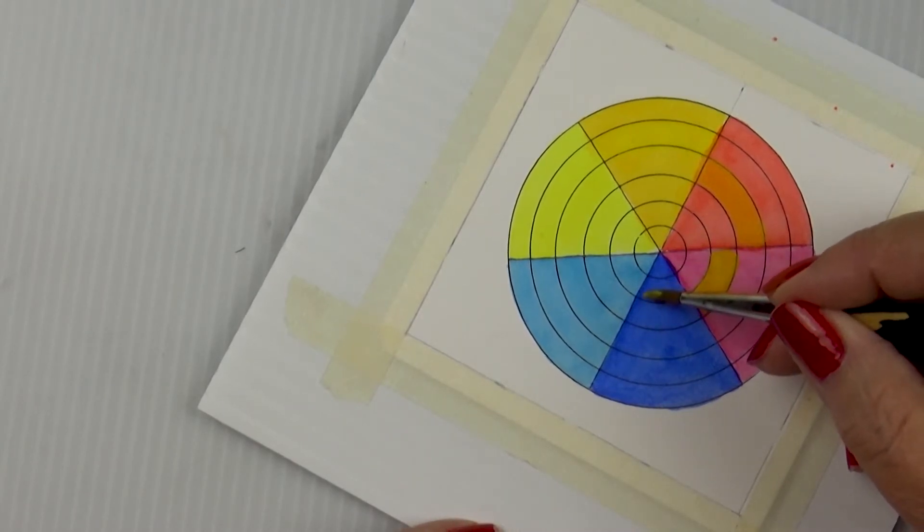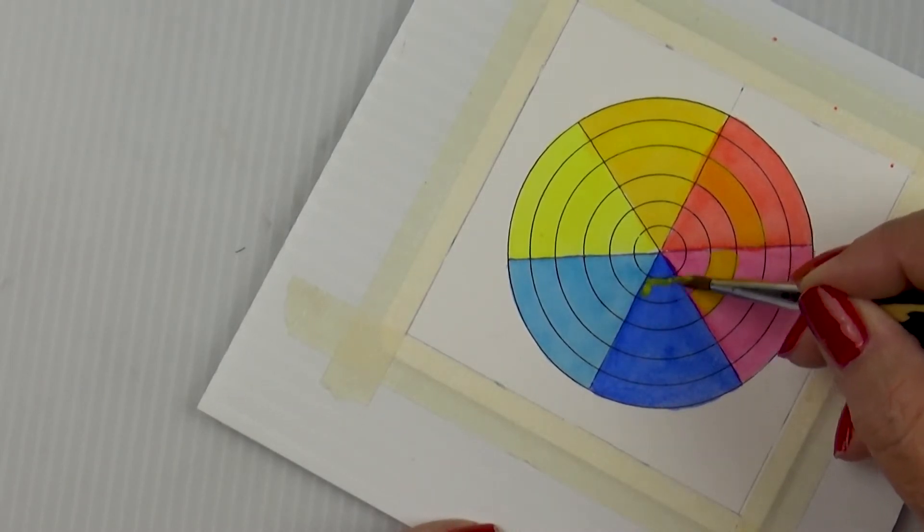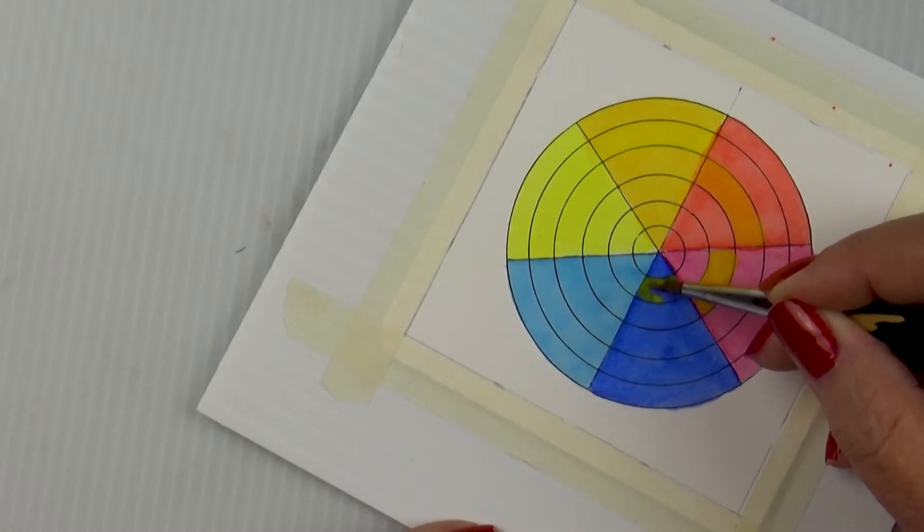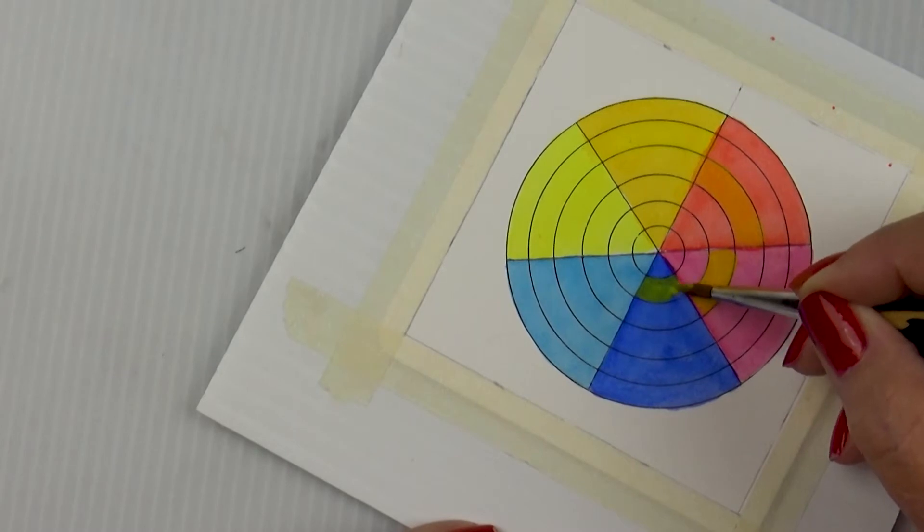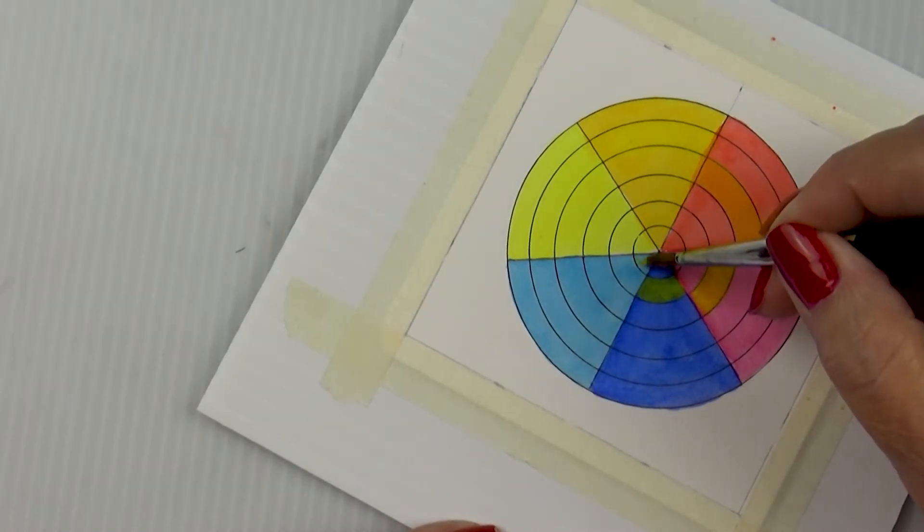Still using Hansa Yellow Light, I moved over to the French Ultramarine piece of pie and painted in the fifth concentric circle. Then I moved on to the Phthalo Blue section and painted it in the sixth concentric circle.